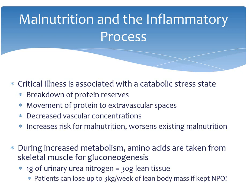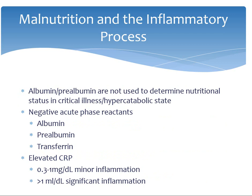Albumin, prealbumin, and transferrin are not reliable markers of nutritional status in the ICU as they are negative acute phase reactants, and the majority of patients in the ICU will have elevated CRPs or estimated sedimentation rates due to their hypercatabolic state and inflammation. These markers are therefore not used to diagnose malnutrition in any capacity.